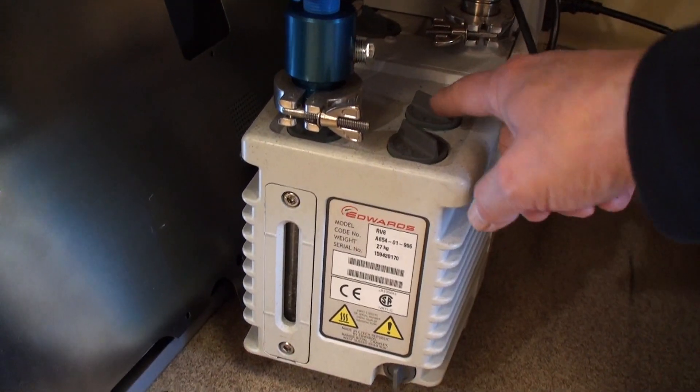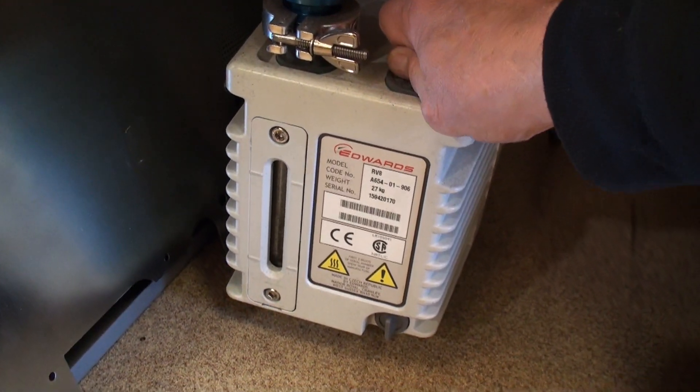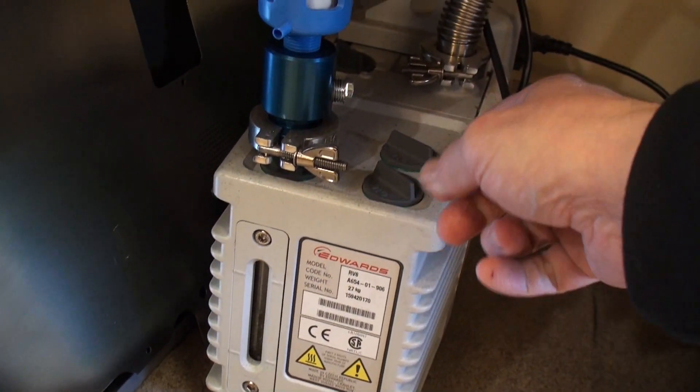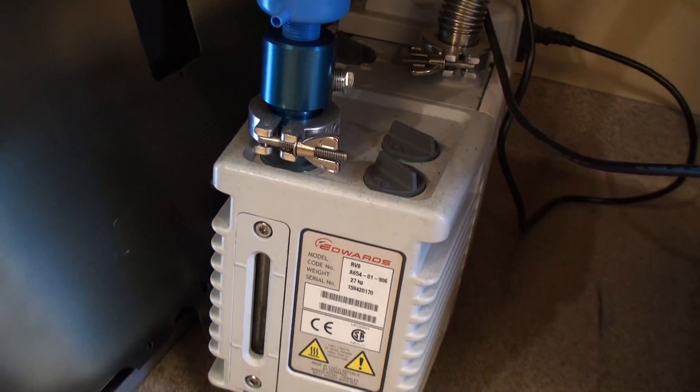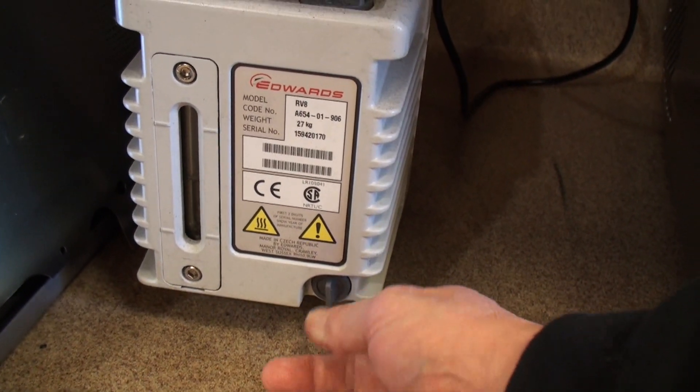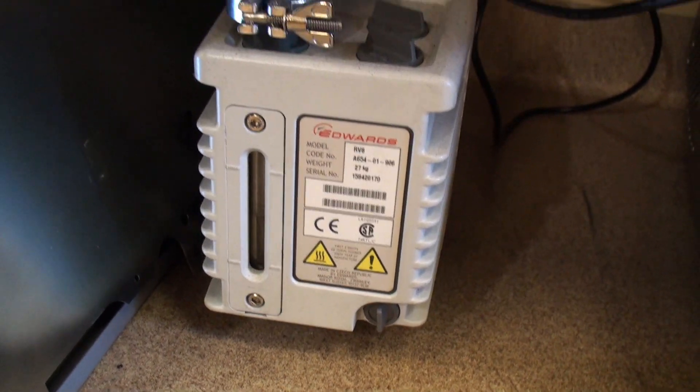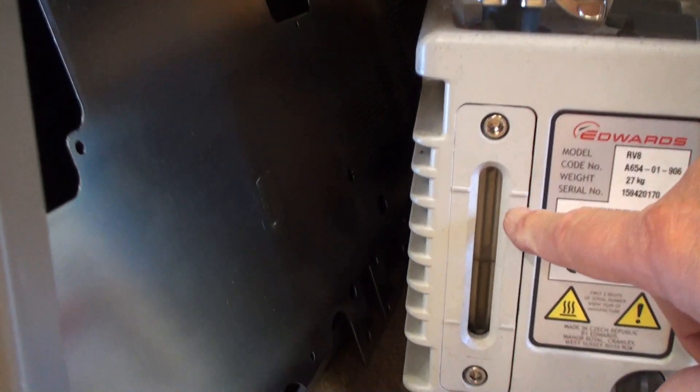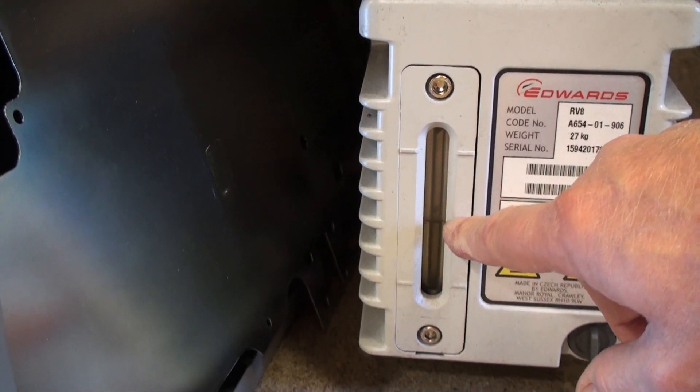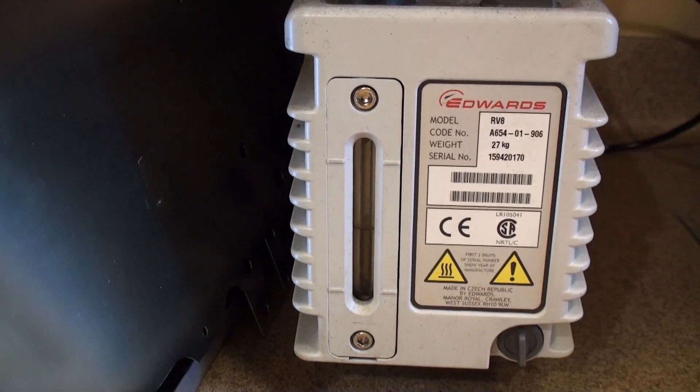These two ports are fill ports and you don't need any special tools, although they are in tight so you might get a pair of pliers to loosen it. This is the drain plug down here. You might need a pair of pliers to loosen that also. Again you have a sight glass and you can see the oil level. Halfway to three quarters is the usual amount of oil that I put in it.